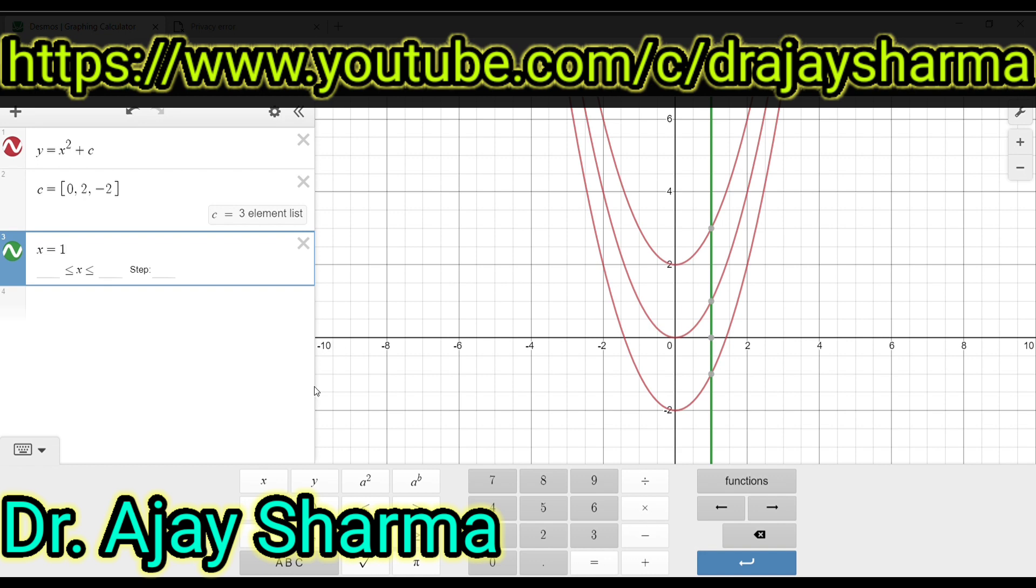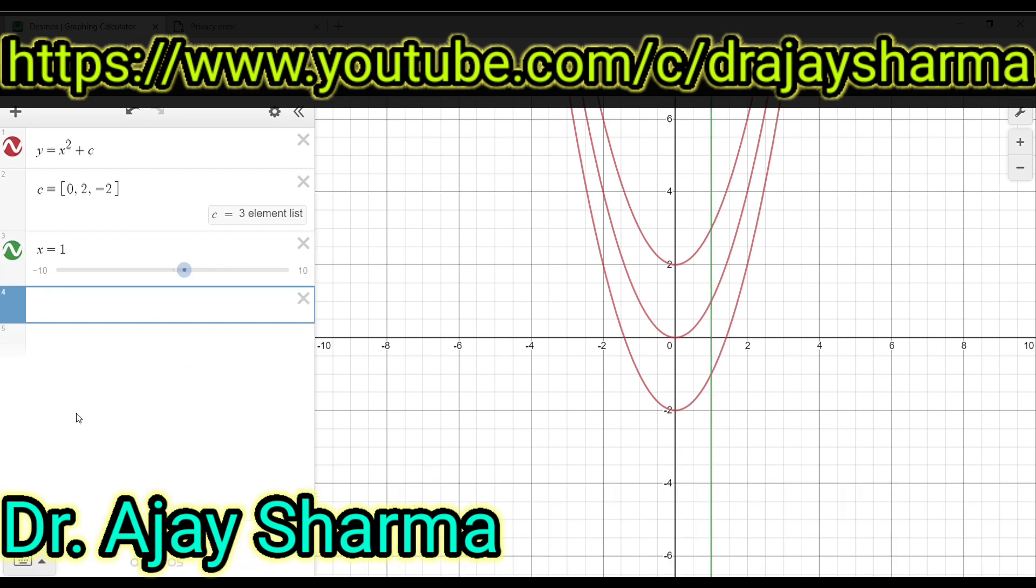So this x is equal to 1 line is parallel to y axis. This line cuts all these curves at different points. If at these points we draw the tangents, let us see what it becomes.